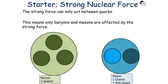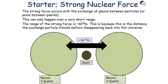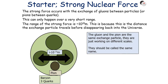The strong interaction can only act between quarks, which means only baryons and mesons are affected by the strong interaction. Leptons, like electrons, are not affected. The strong force occurs with the exchange of gluons between particles, or pions between quarks, and this can only happen over a very short range of about 10 to the minus 15 metres, known as a femtometre. This is the distance the exchange particle travels before disappearing back into the universe. The gluon and the pion are essentially the same exchange particle working on different scales — we call it a pion between quarks and a gluon between particles.